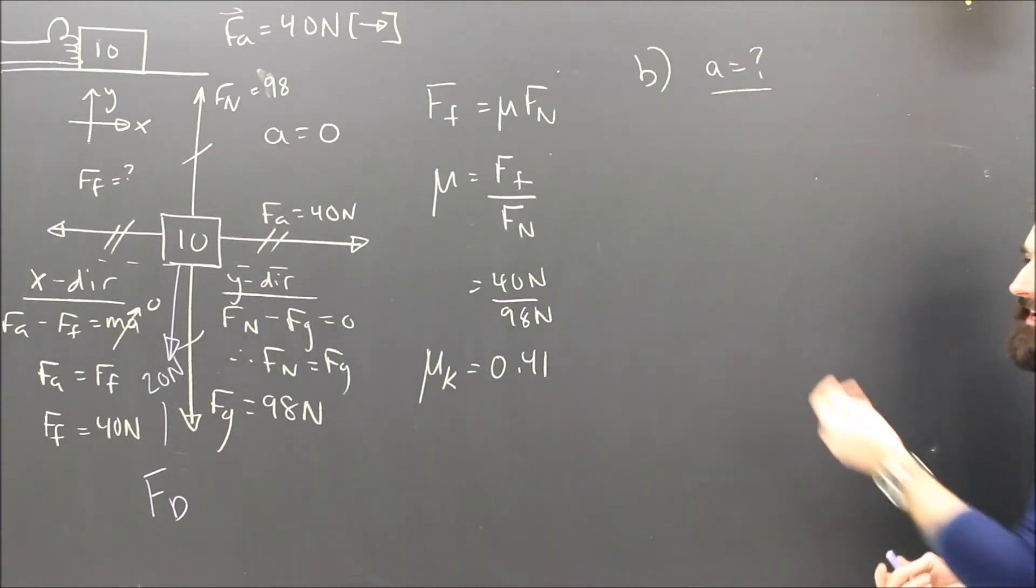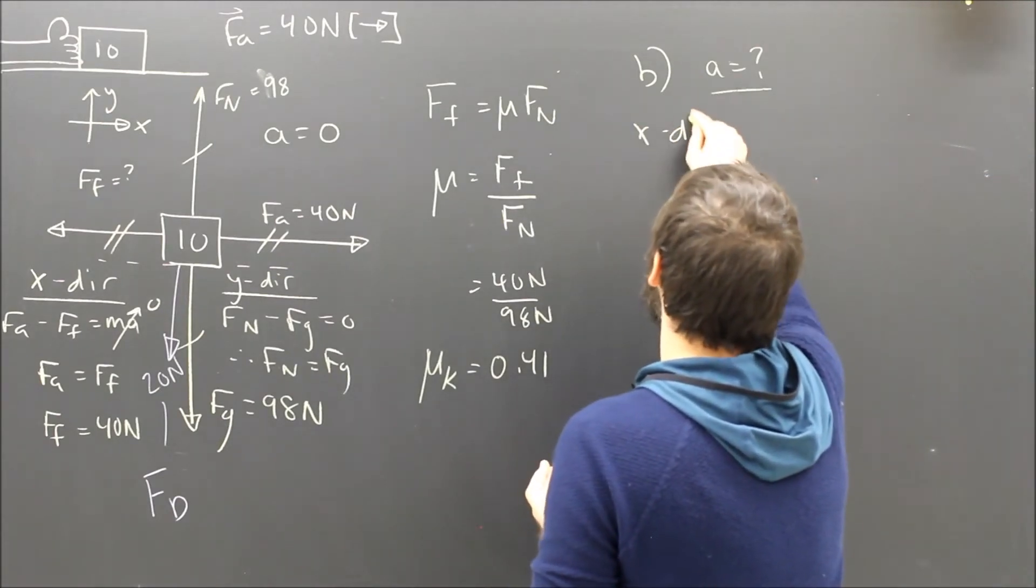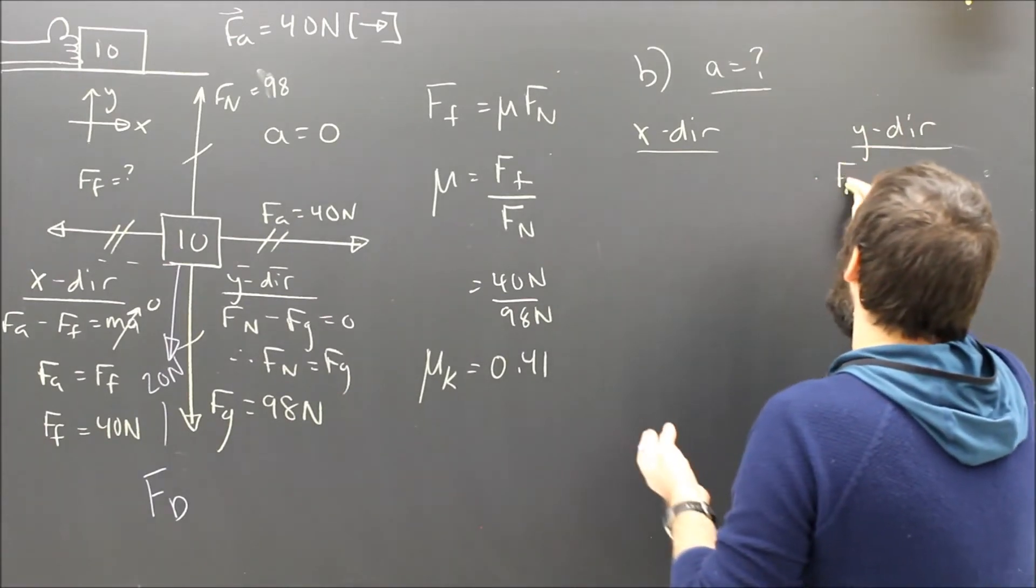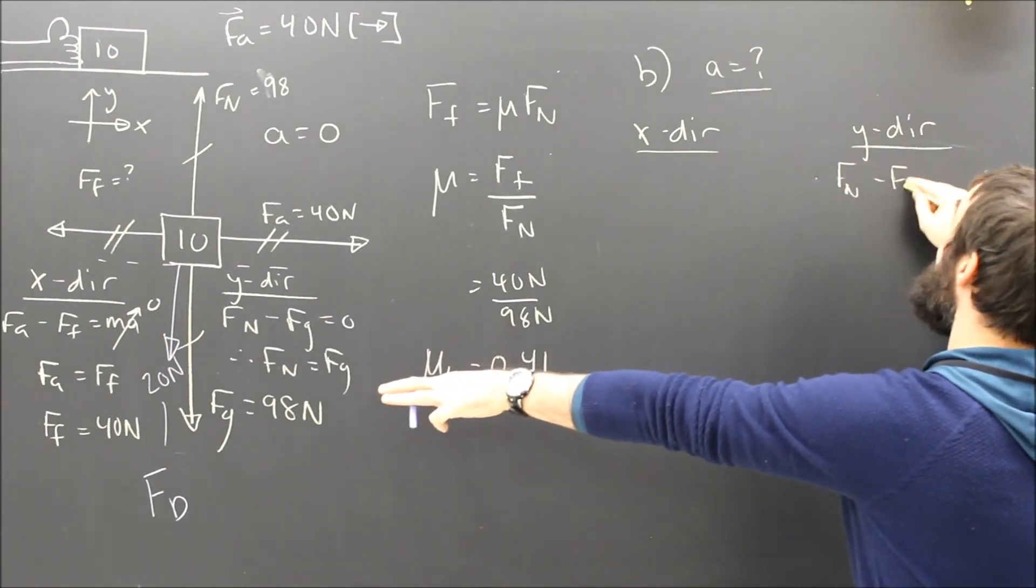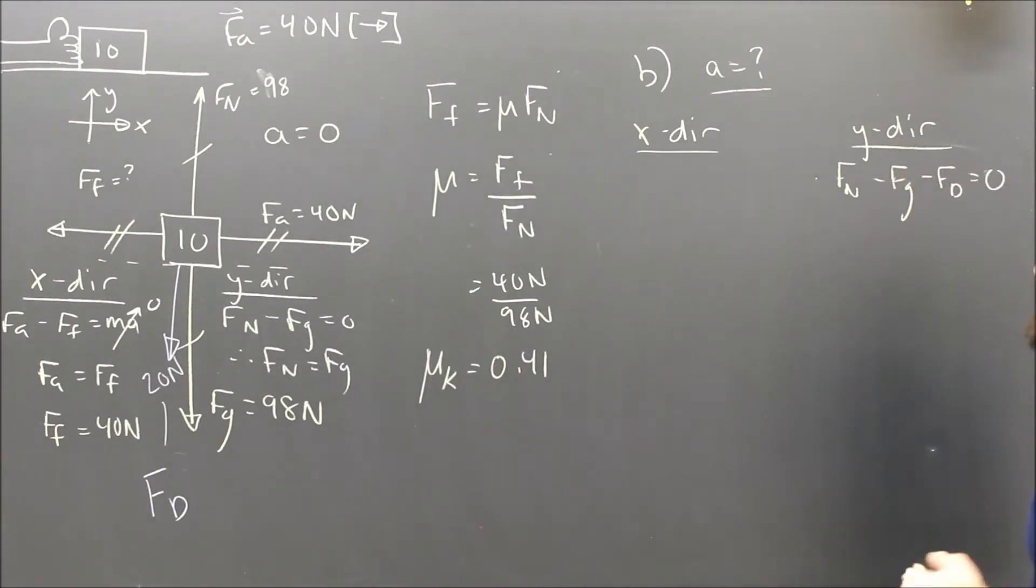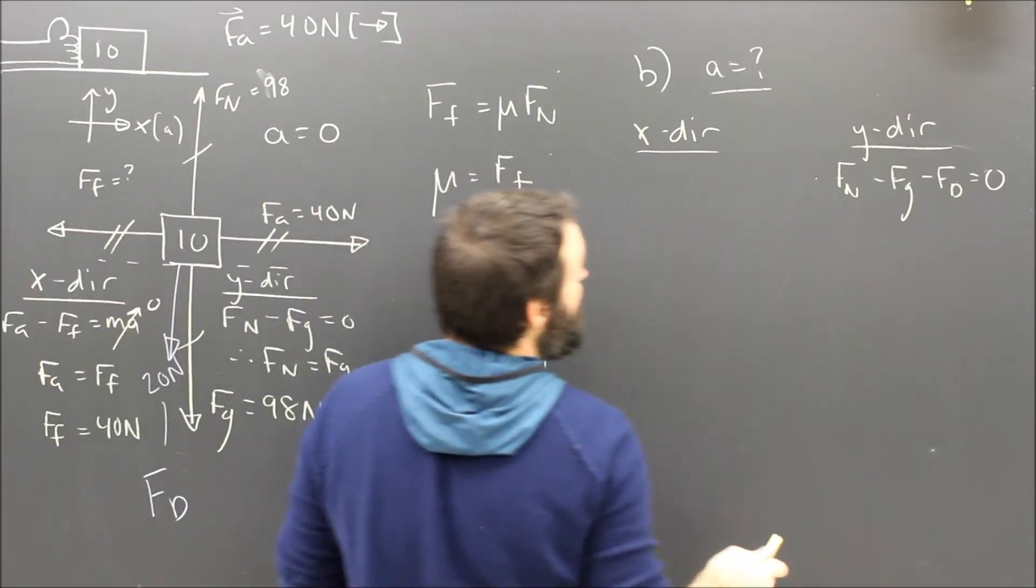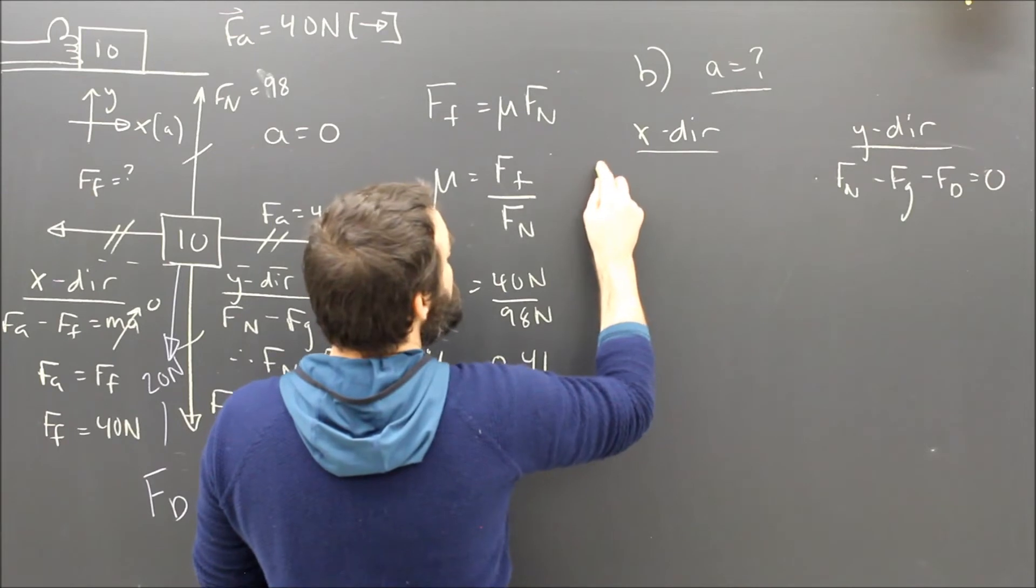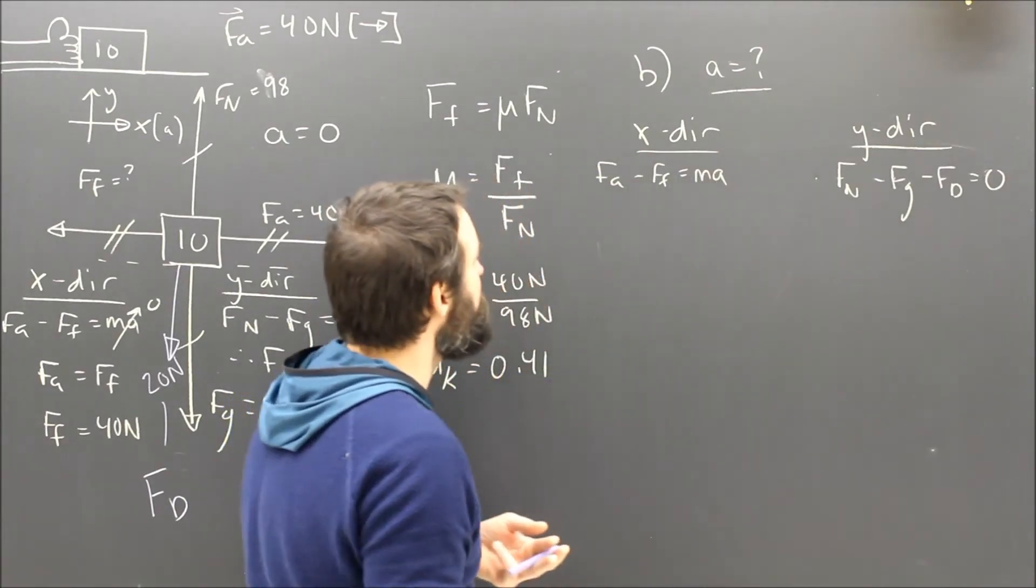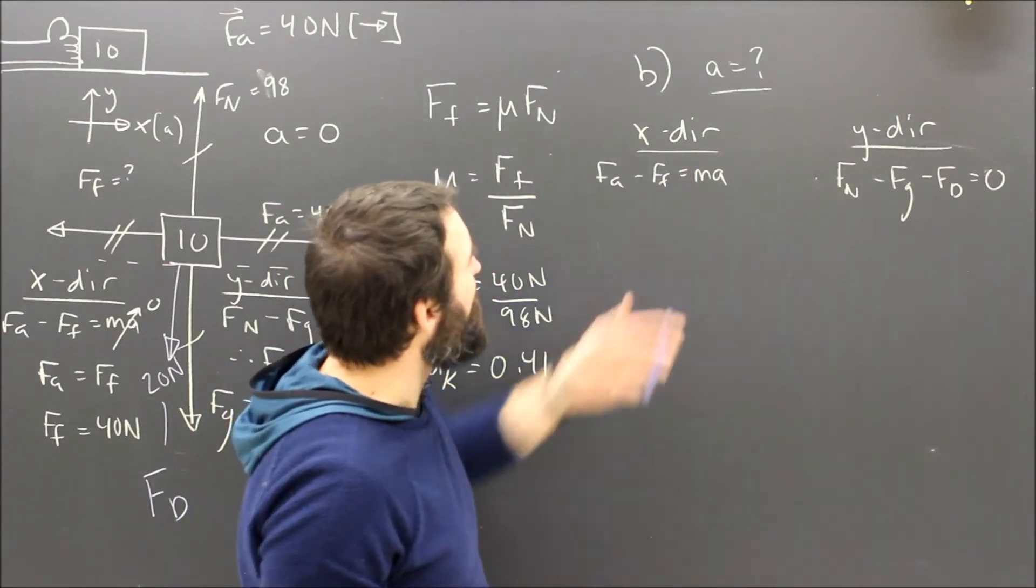So what's the acceleration now? Looking at my new free body diagram, I'll look at my X and Y equations. I've got a new free body diagram, so I have to have new X and Y equations. Now, FN minus FG is not equal to zero because I've also got a minus FD. That will be equal to zero. The acceleration is still to the right. I'm still going to call it X to the right. My X direction equation will say that FA minus FF equals MA. That's just fine. Rearranging, shoving in, solving, what am I trying to find? I'm trying to find acceleration.